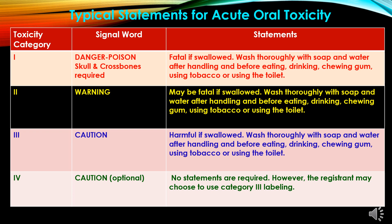Now to study typical statements for acute oral toxicity. In toxicity category 1, the signal word is 'Danger/Poison,' a skull and crossbones is required, and the statement reads: fatal if swallowed; wash thoroughly with soap and water after handling and before eating, drinking, chewing gum, using tobacco or using the toilet. In category 2, the signal word is 'Warning,' and the statement is: may be fatal if swallowed, with the same washing instruction. In category 3, the signal word is 'Caution,' and the statement is: harmful if swallowed. In category 4, the signal word is 'Caution' (optional), and no specific statement is required, though the registrant may choose to use category 3 labelling.